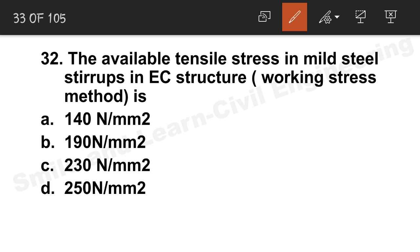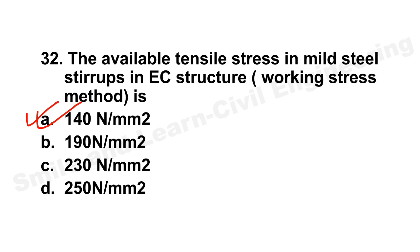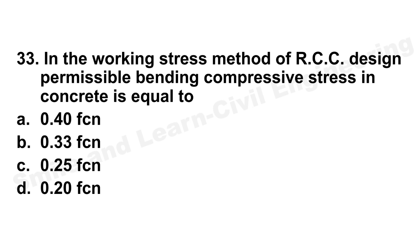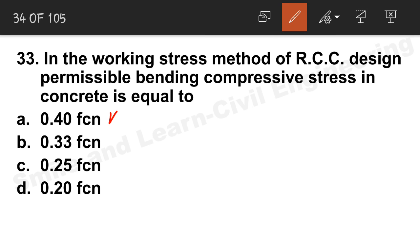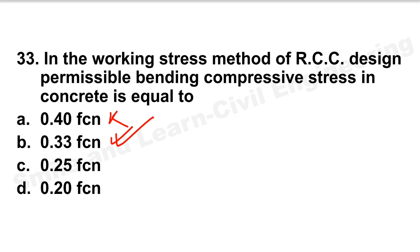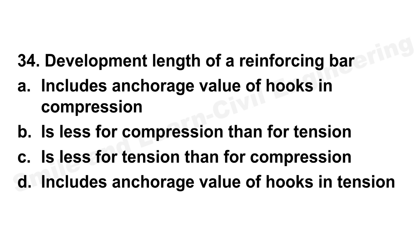Question 32: Available tensile stress in mild steel stirrups in RCC structure by the working stress method. For mild steel, the tensile stress is 140 MPa. Question 33: In the working stress method of RCC design, the permissible bending compressive stress in concrete is 0.33 fck. Option B is the correct answer.